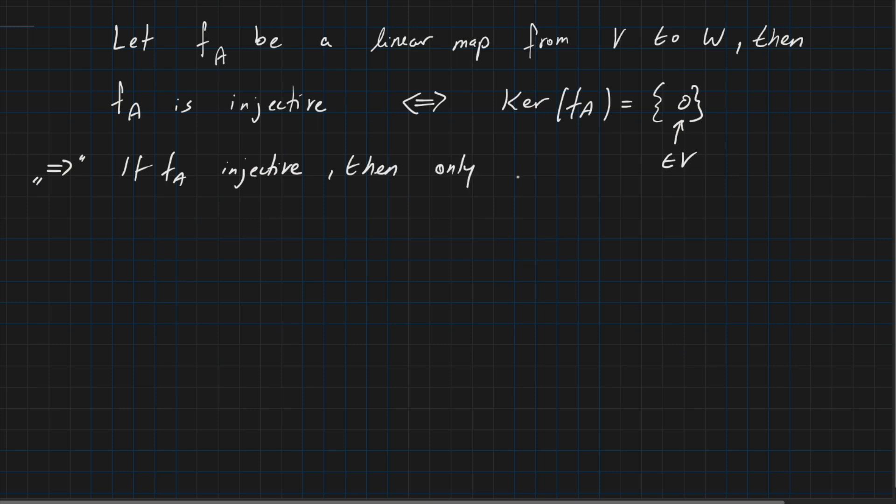Only 0 from V maps to 0 from W. So we know for linear maps, 0 always maps to 0, but the question is, are there also other elements from our vector space V which also map to 0? So because FA is injective, the answer is no. Only 0 maps to 0 here because the pre-image of 0 can only have one element and it's at least 0, so it must be exactly 0.